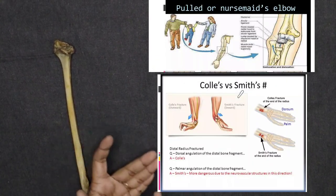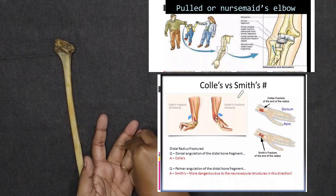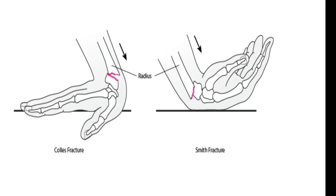Coming to clinical anatomy, there are three points. First is Colles' fracture: the lower end of the radius breaks about 2cm above the wrist, and the distal fragment displaces backward and upward. Second is Smith's fracture: also a break 2cm above the wrist, but the fragment displaces anteriorly (forward). The only difference between Colles' fracture and Smith's fracture is the direction of displacement — backward for Colles', forward for Smith's.